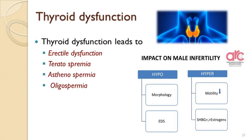Assessment of thyroid function is very important in infertility. Both hyperthyroidism and hypothyroidism may lead to infertility in both males and females. In females, thyroid dysfunction leads to anovulation, poor implantation, and recurrent pregnancy loss. In males, poor thyroid function leads to coital problems such as erectile dysfunction, teratospermia, or weak motility in the form of asthenospermia. Normalcy of thyroid function is therefore very important for successful conception and maintenance of pregnancy.